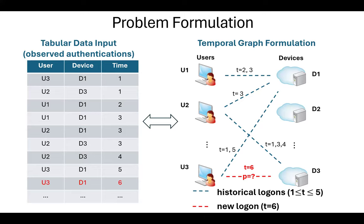This task is typically formulated as the link prediction task on the temporal graph constructed from the authentication events.